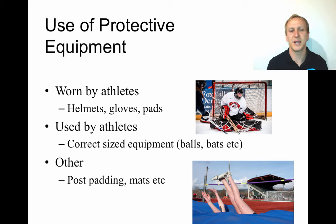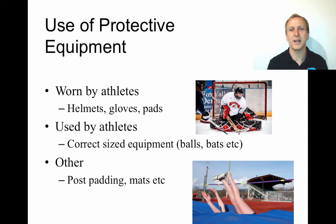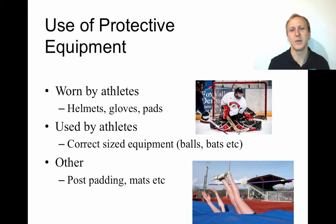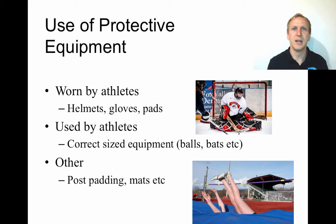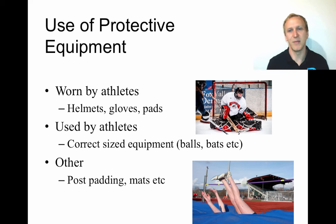Protective equipment also includes using the correct size equipment for the athlete — the right size balls, bats, and gear. In cricket, giving a batter a bat of the right size means they're less likely to be hit by the ball. There's also equipment like the high jump mat and padding placed around posts in rugby league and netball, so that when athletes run into those posts, the injury is reduced in intensity compared to if no padding existed.